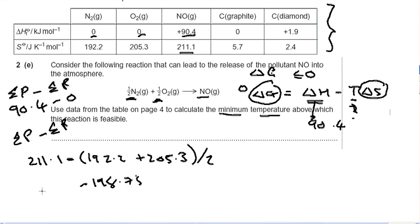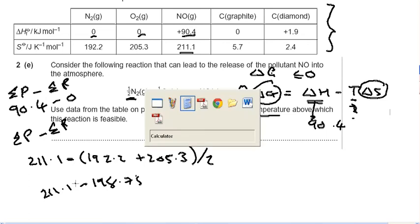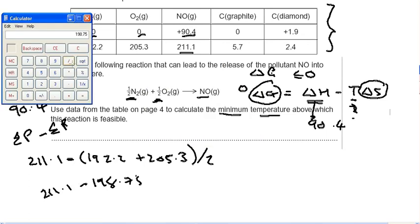I'm going to take that away from 211.1. I'm going back to my calculator. I'm just going to clear it and I'm going to put it all in. 211.1 minus 198.75. So we've got a 12.35 entropy change.